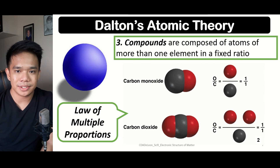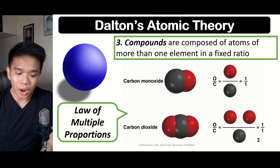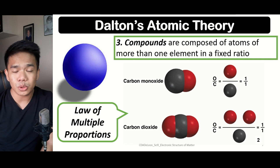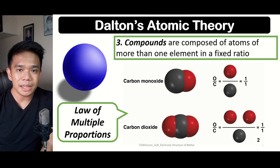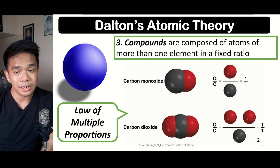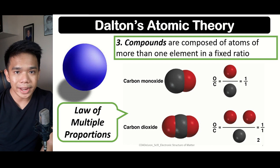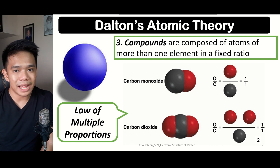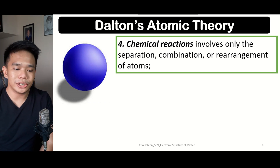According to the law of multiple proportions, compounds made up of the same elements can have different ratios. For example, carbon monoxide and carbon dioxide are both made up of carbon and oxygen. Carbon monoxide (CO) has one atom of carbon and one atom of oxygen — a ratio of 1:1. Carbon dioxide (CO₂) has one atom of carbon and two atoms of oxygen — giving a ratio of 2:1 for oxygen to carbon.